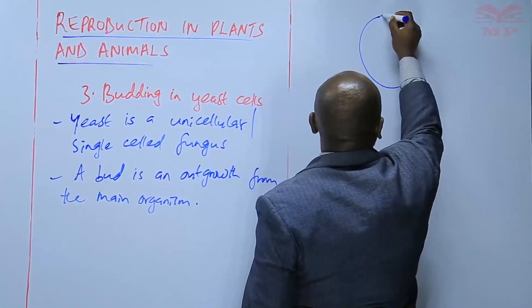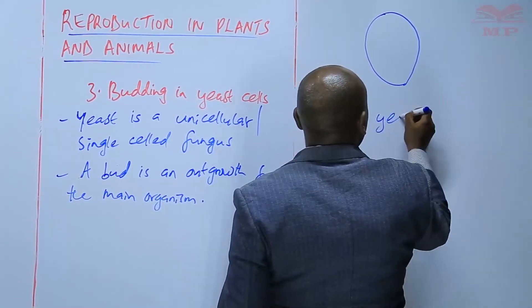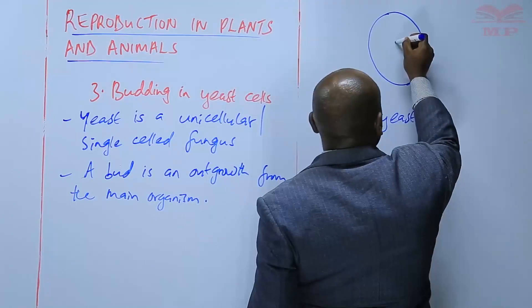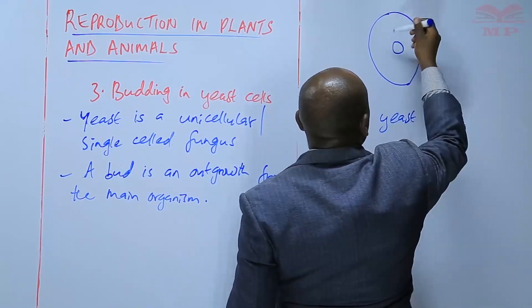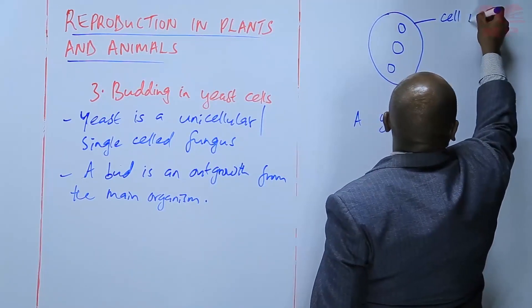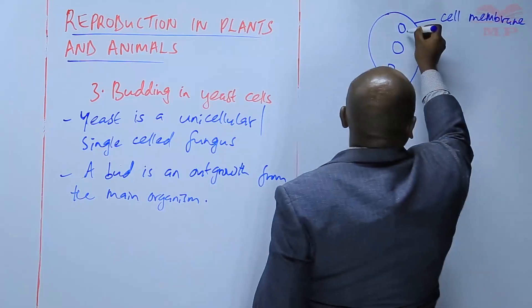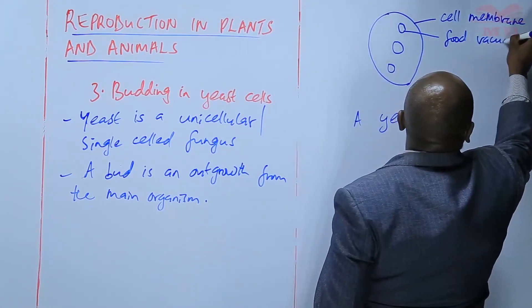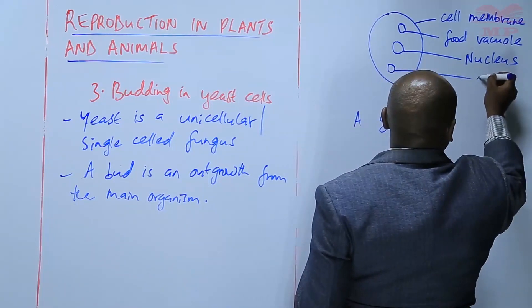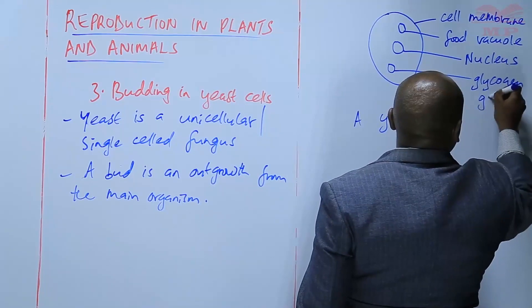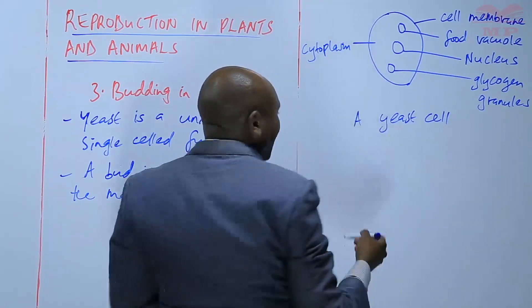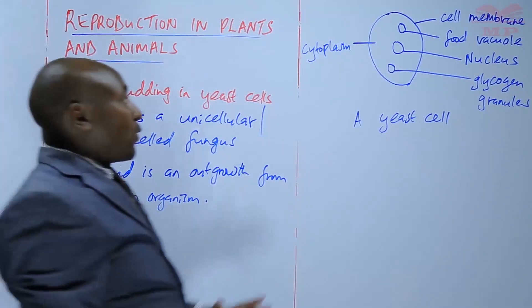Here is a structure of the yeast cell. Just like other cells, it has a nucleus, a cell membrane, a food vacuole, glycogen granules, the cytoplasm, and basically other structures found within a cell.